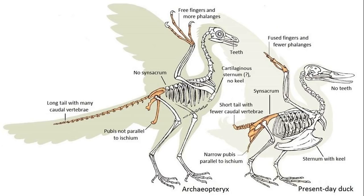Darwin also observed that the bones inside the wings of birds looked like they were fingers that got fused together, so he predicted that a fossil of an ancient bird with separate fingers would be found one day. This ended up being Archaeopteryx. The first specimen was discovered just two years after the publication of Darwin's book On the Origin of Species.